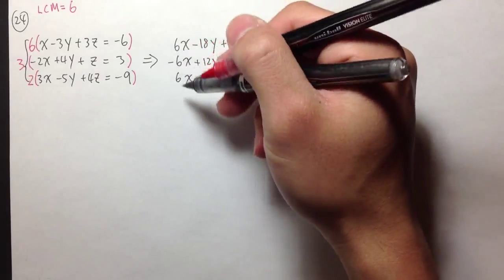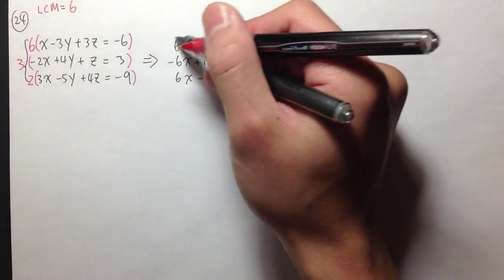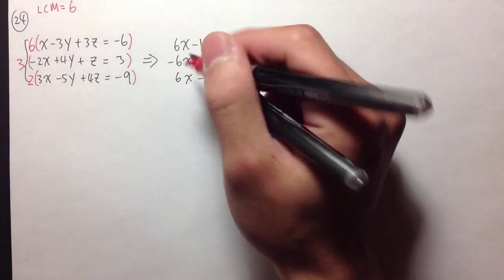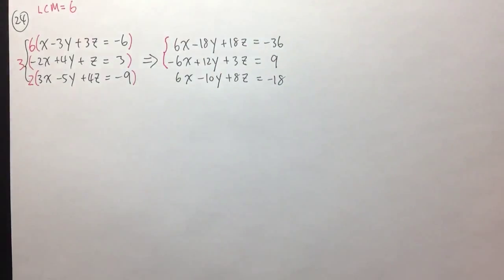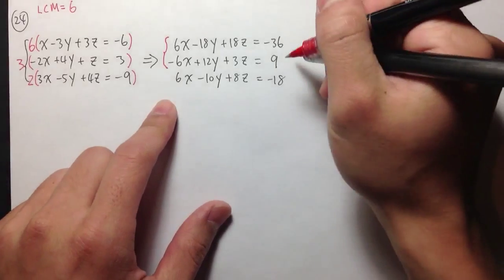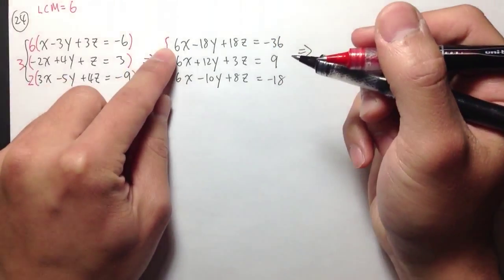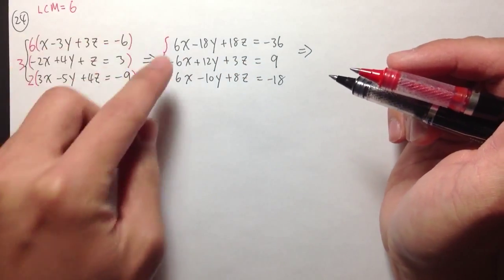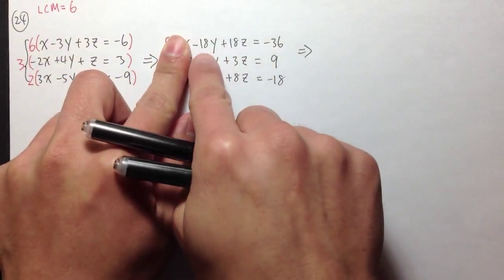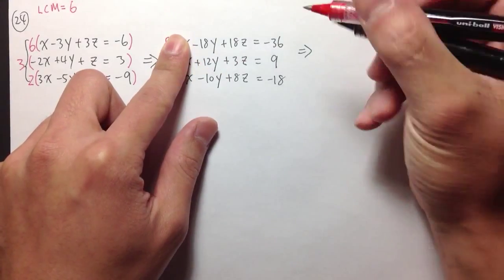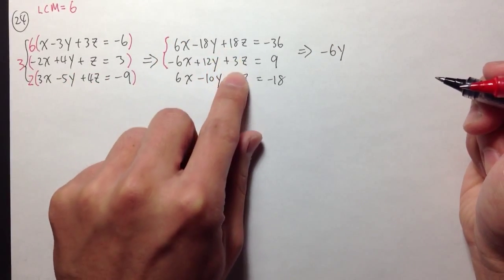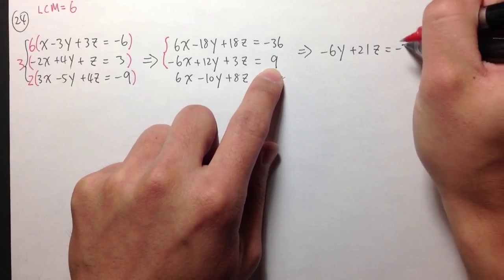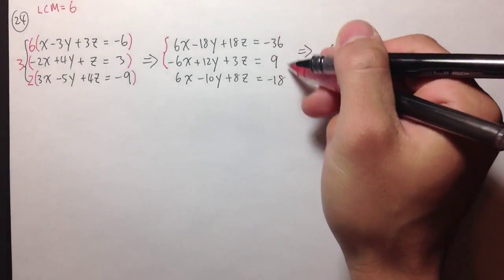As you can see, we have all the same coefficients in front of x. We have positive 6x, then negative 6x in the middle, and positive 6x at the end. This is convenient because we are going to combine the first two equations: 6x and negative 6x cancel out. Negative 18y plus 12y gives negative 6y, and 18z plus 3z gives plus 21z, equaling negative 36 plus 9, which is negative 27.